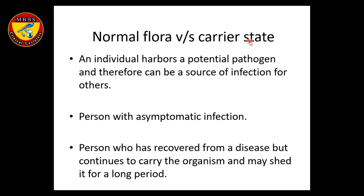Carrier state is different from normal flora. An individual may harbor a potential pathogen and therefore can be a source of infection for others. For example, a person with an asymptomatic infection may carry the organism without being affected, or may have recovered from a disease but still carry the organism for a long period — for example, Salmonella typhi, which may persist in the gallbladder after recovery and cause typhoid in others.